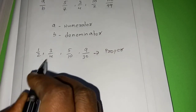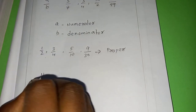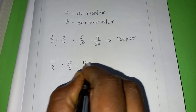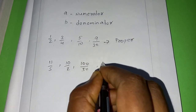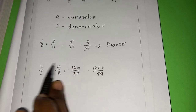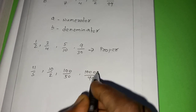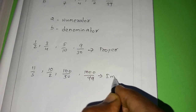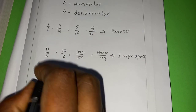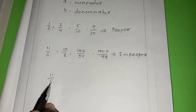If the numerator is bigger than the denominator, like 11 by 5, 10 by 2, 100 by 50, or 1000 by 99, in these cases the numerator is bigger than the denominator. So we call them improper fractions. For example, 11 by 5 is an improper fraction.